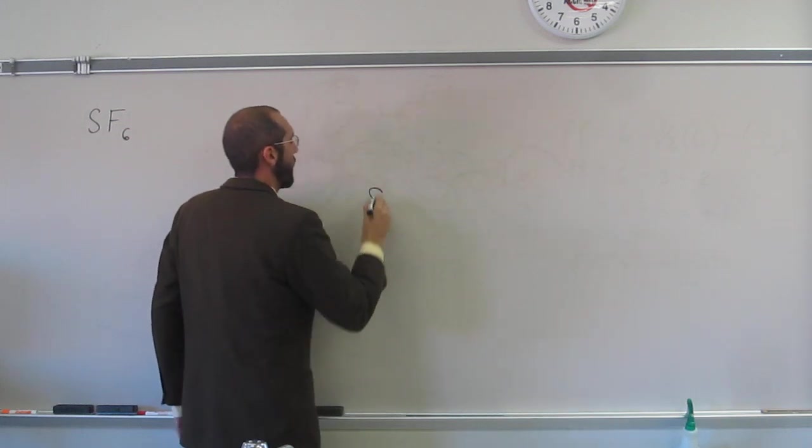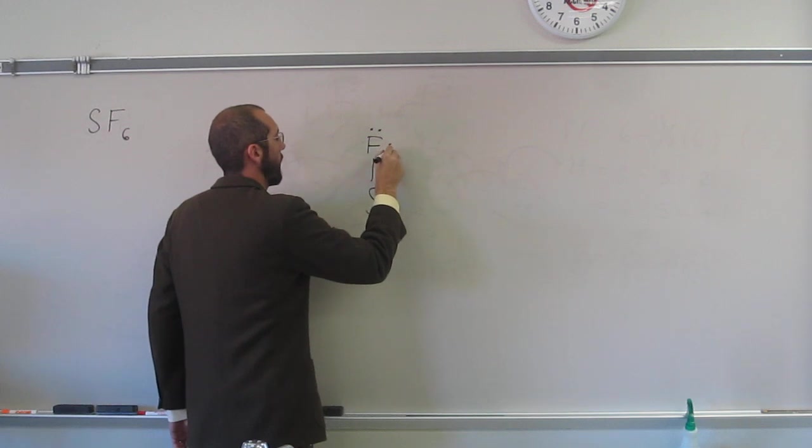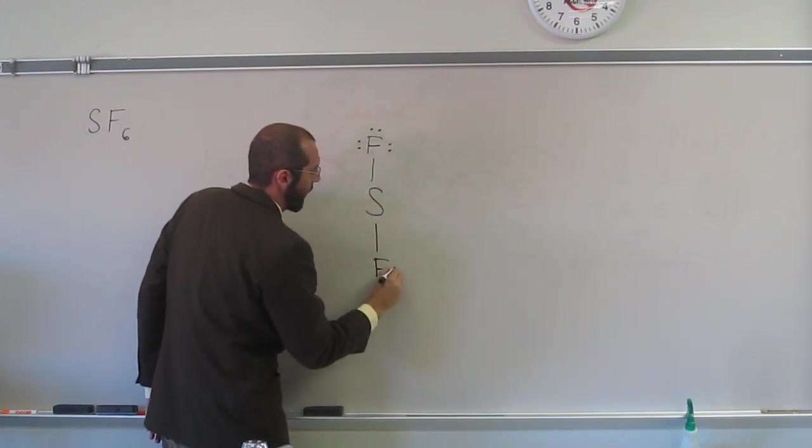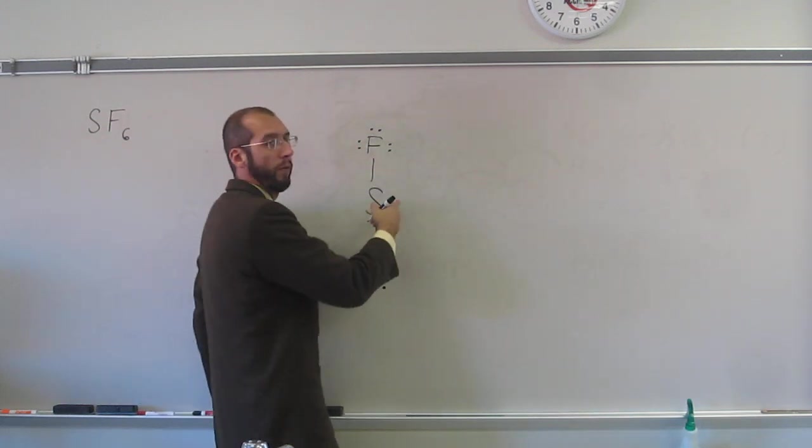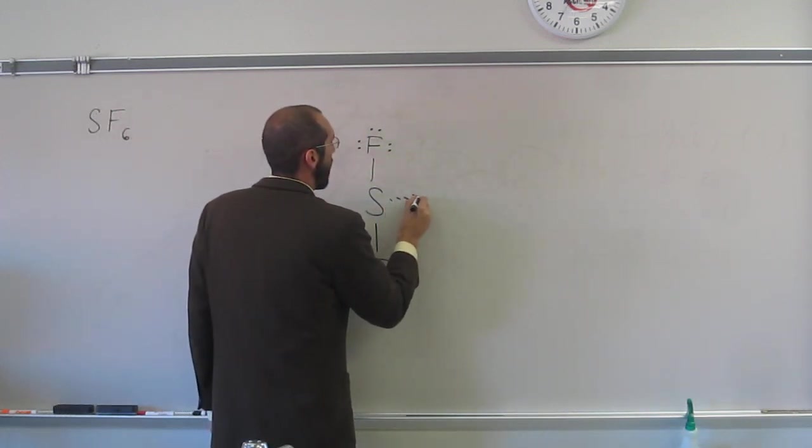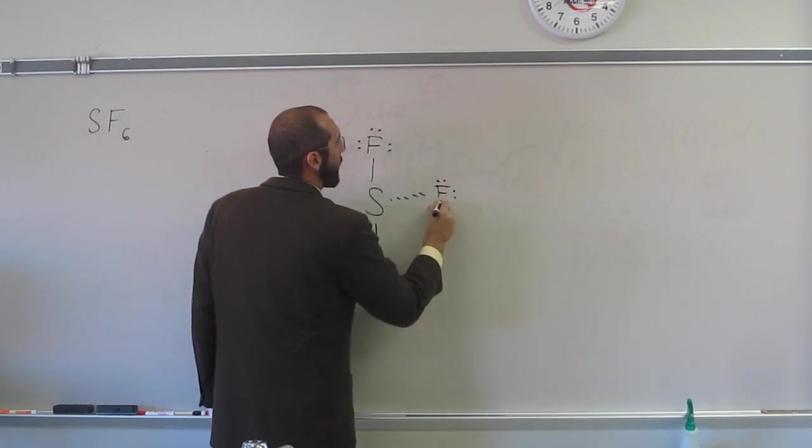So what we'll have when we do this is two of the substituents in what we call axial positions and then four of them in the equatorial, so equatorial like on the equator.